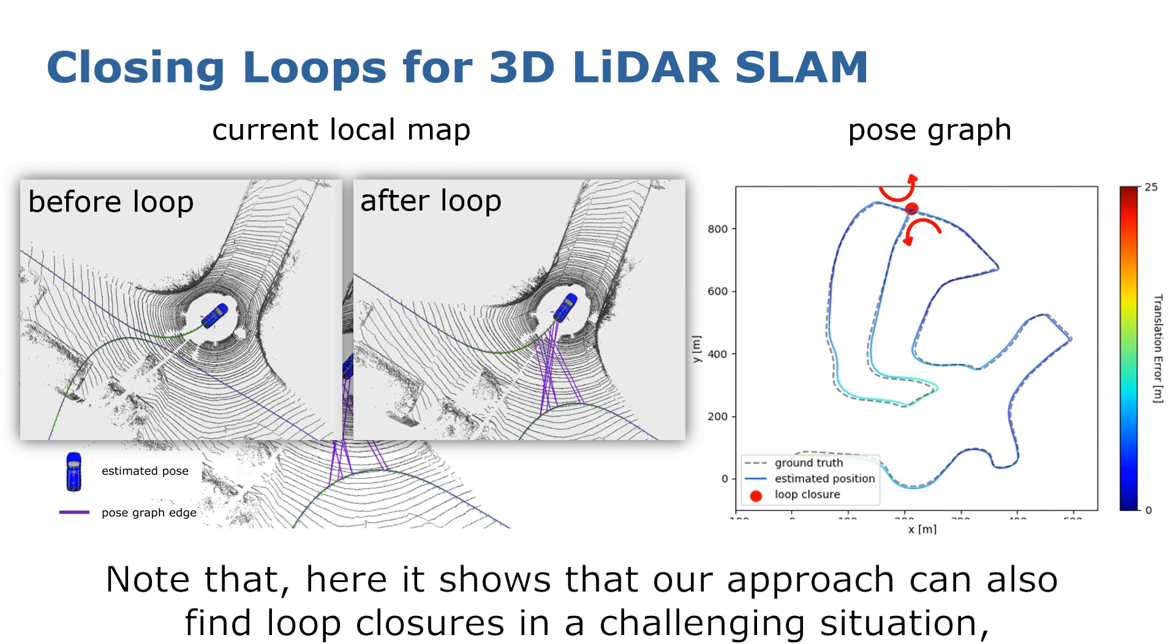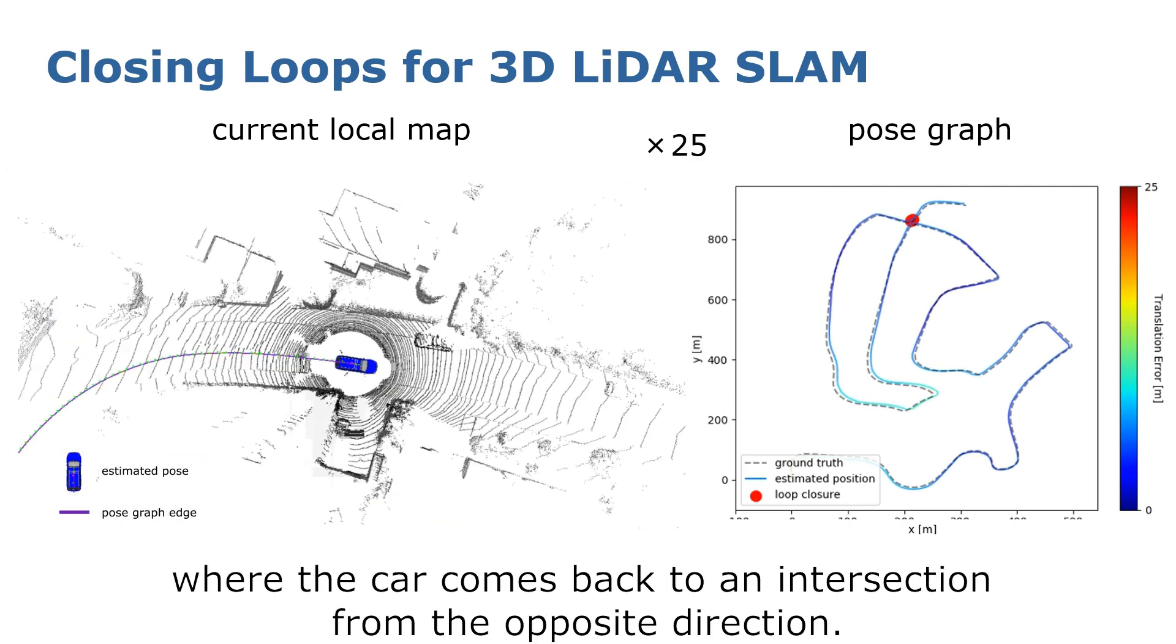Note that here it shows that our approach can also find loop closures in a challenging situation, where the car comes back to an intersection from the opposite direction.